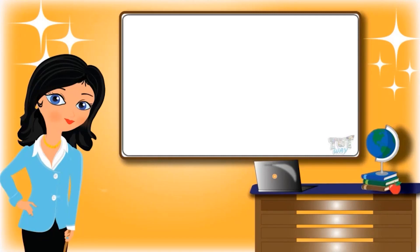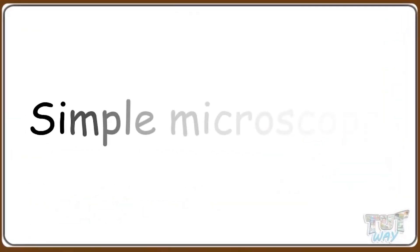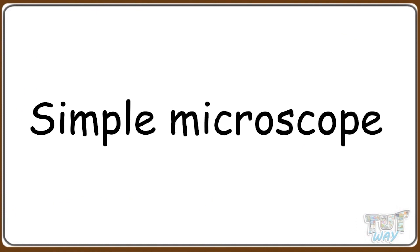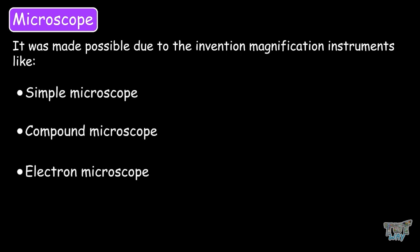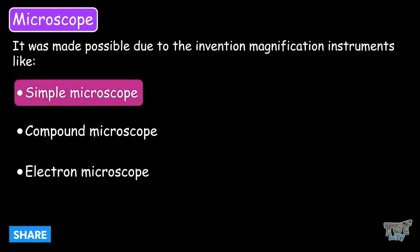Hi friends, today we will learn about the simple microscope. So let's start. How were all the studies on cells made possible? It was all made possible due to the invention of magnification instruments like the simple microscope, compound microscope, and electron microscope. But the first one to be invented was a simple microscope and we will learn about it today.